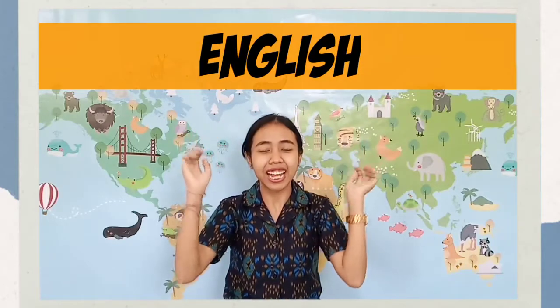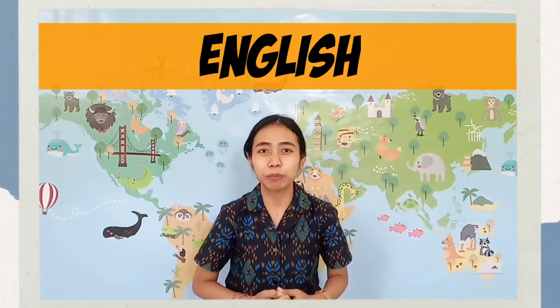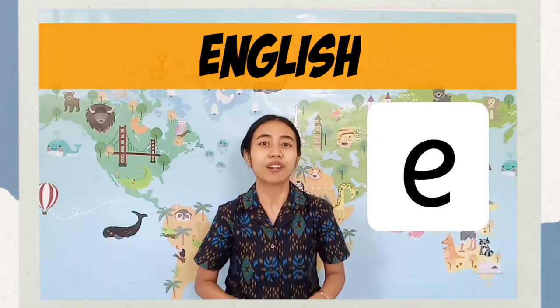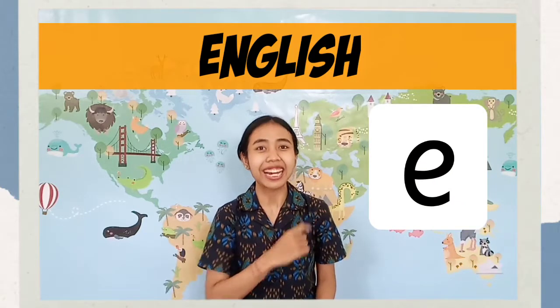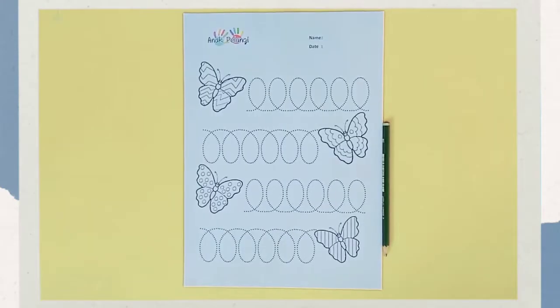Hello Rainbow Kids! It's Mimi Spero, your playgroup teacher. Okay, today we will learn about English and we practice to make underloops of letter E. Are you ready? Okay, Rainbow Kids!